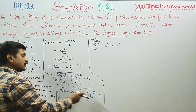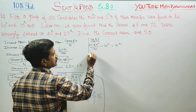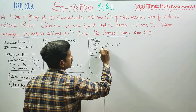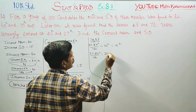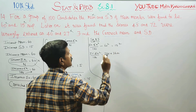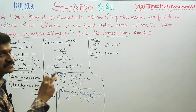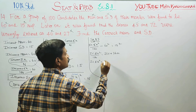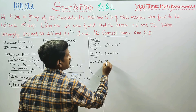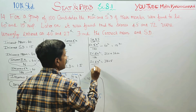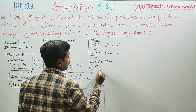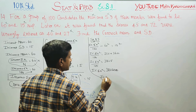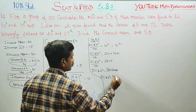Squaring both sides: 15 squared is 225, and 60 squared is 3600. So incorrect Sigma x² by 100 equals 225 plus 3600, which equals 3825. Cross-multiplying by 100: incorrect Sigma x² equals 3825 into 100, giving incorrect Sigma x² equal to 382500.